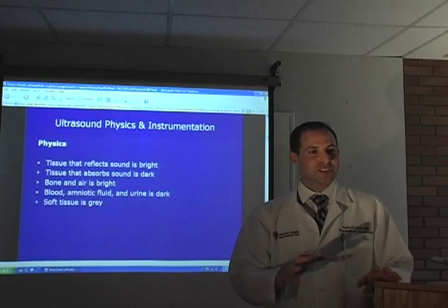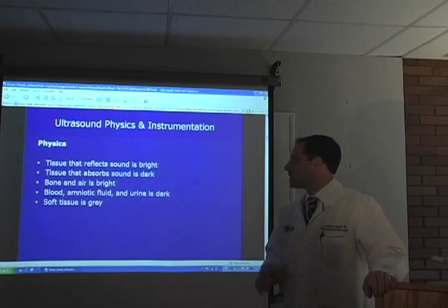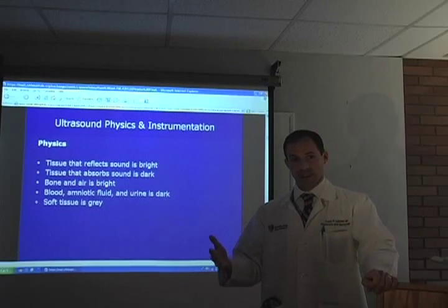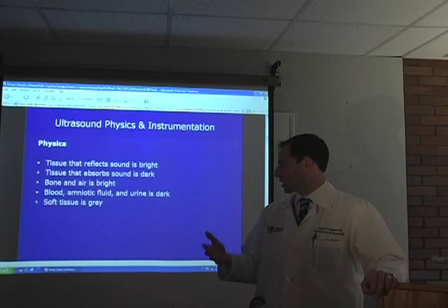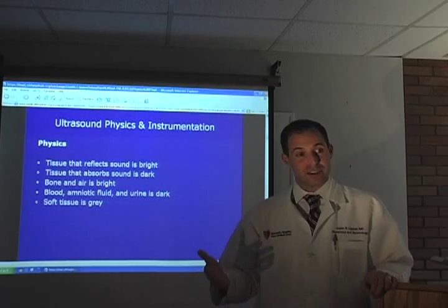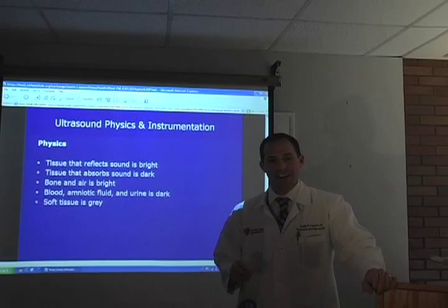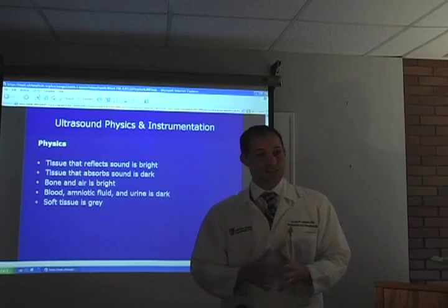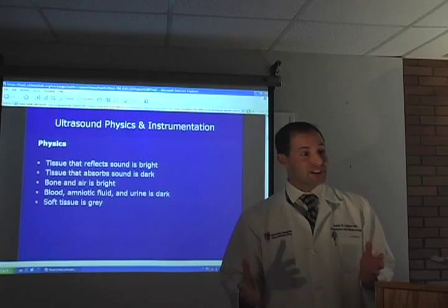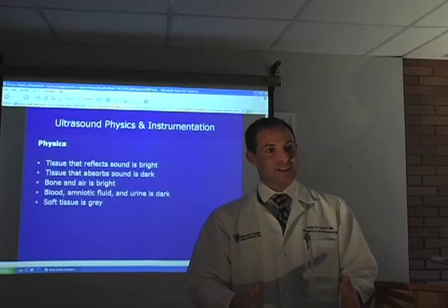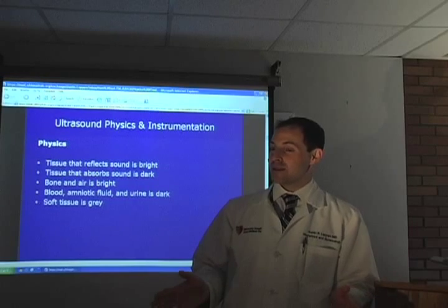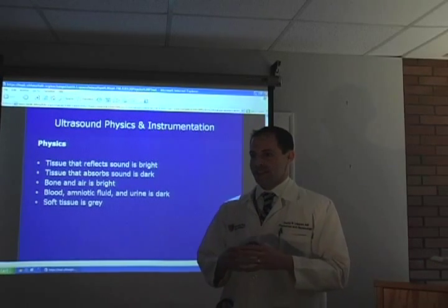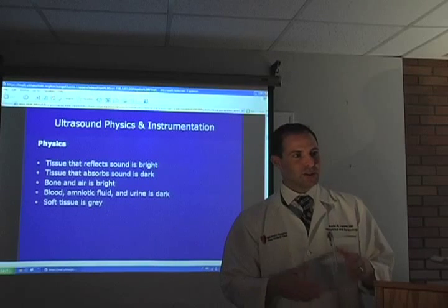Tissue that reflects a lot of sound is bright — for example, bone. Tissues that absorb a lot of sound waves are dark. Air is not necessarily bright; it has a great amount of dispersion or attenuation — it's the enemy of ultrasound. The reason we use ultrasound gel is so that there is a medium through which sound waves can be transmitted to the area being imaged. Without gel, you get a lot of brightness and scatter. Fluid — urine, blood — is dark, because sound waves travel very well through it and don't reflect back as much. Soft tissue comes back in varying shades of gray.